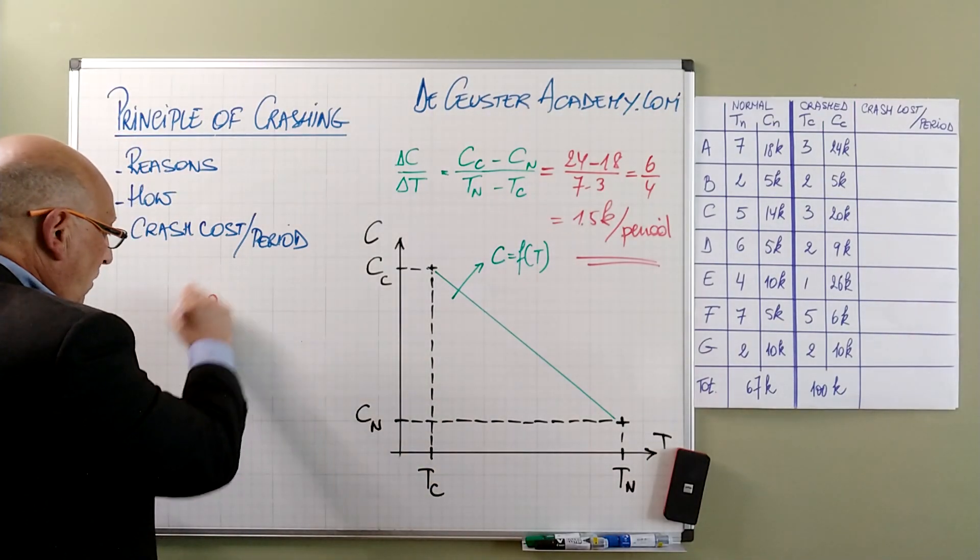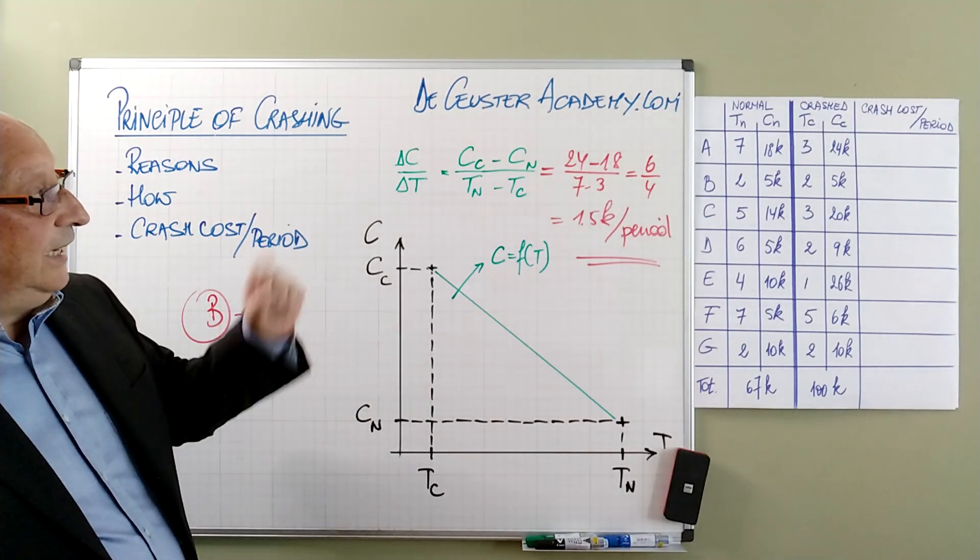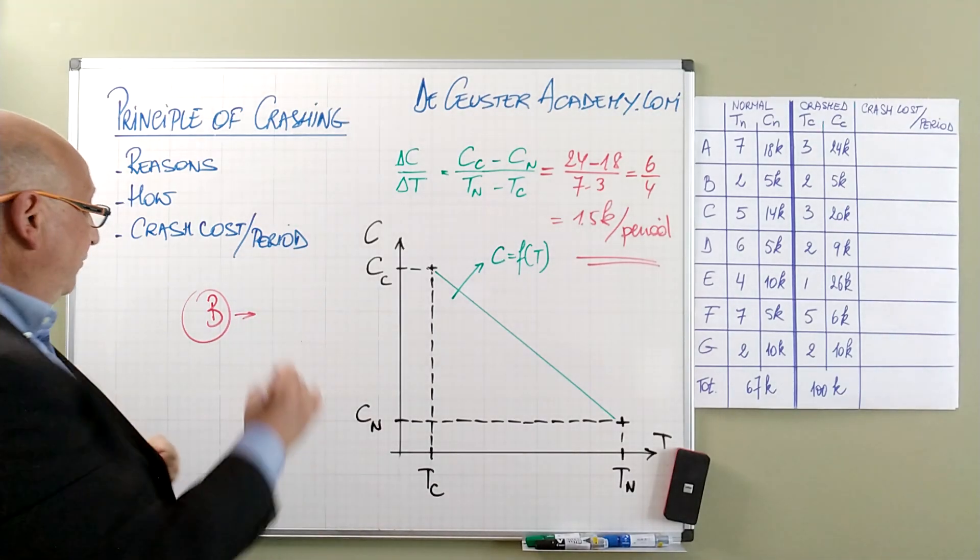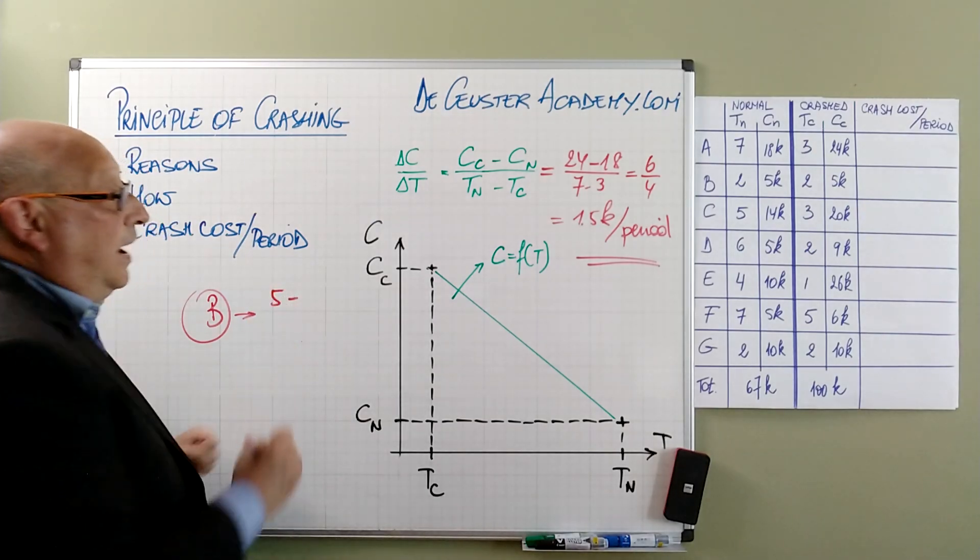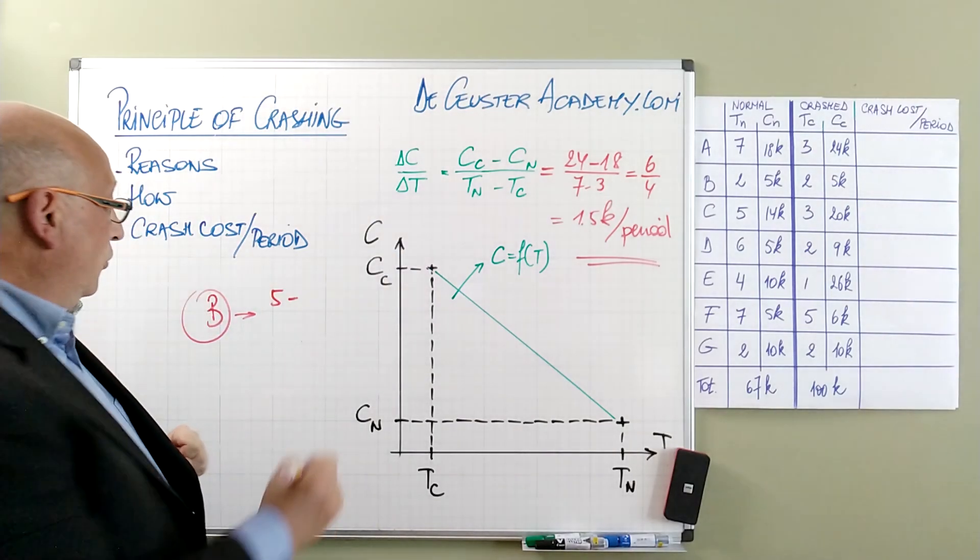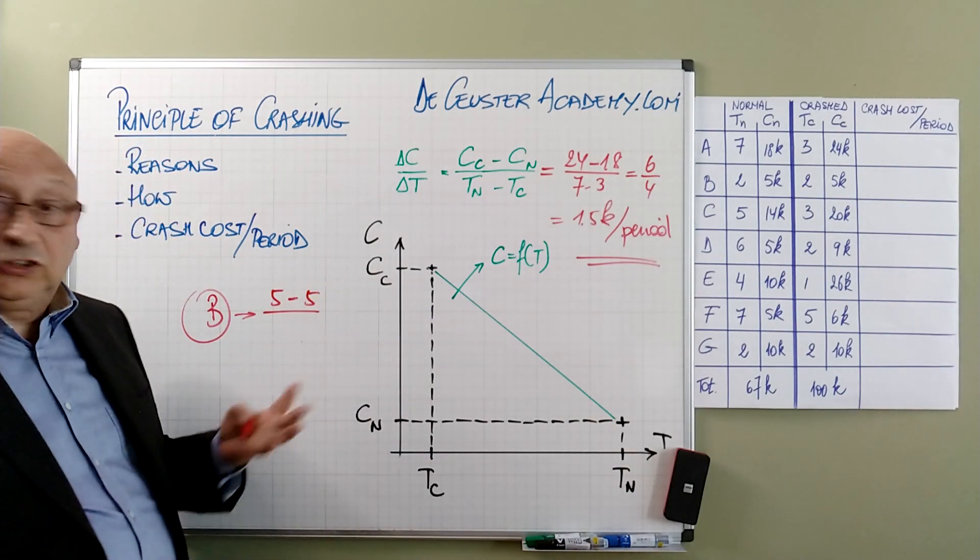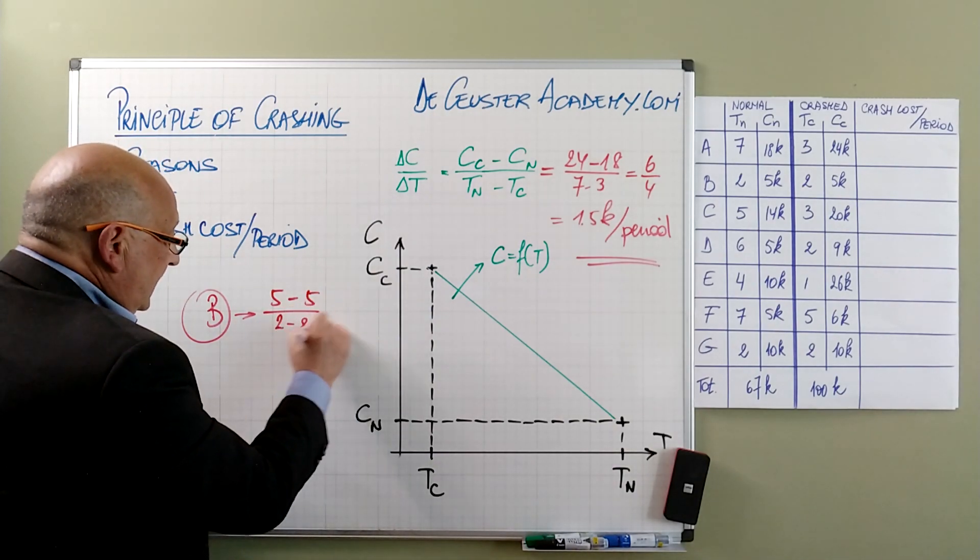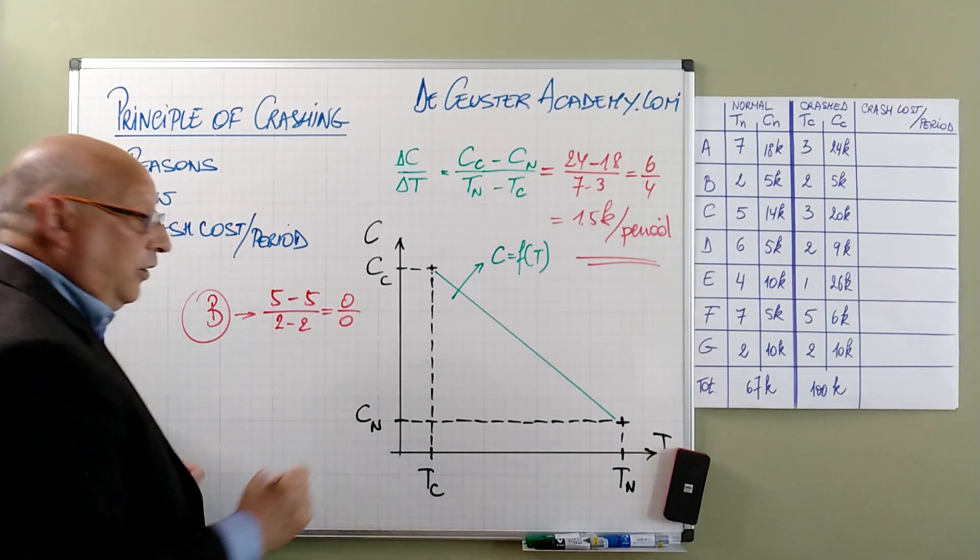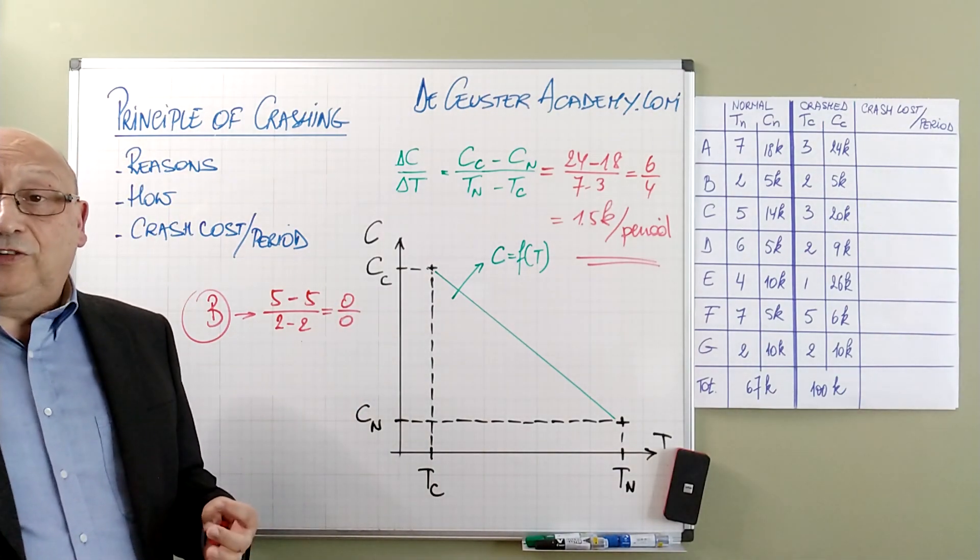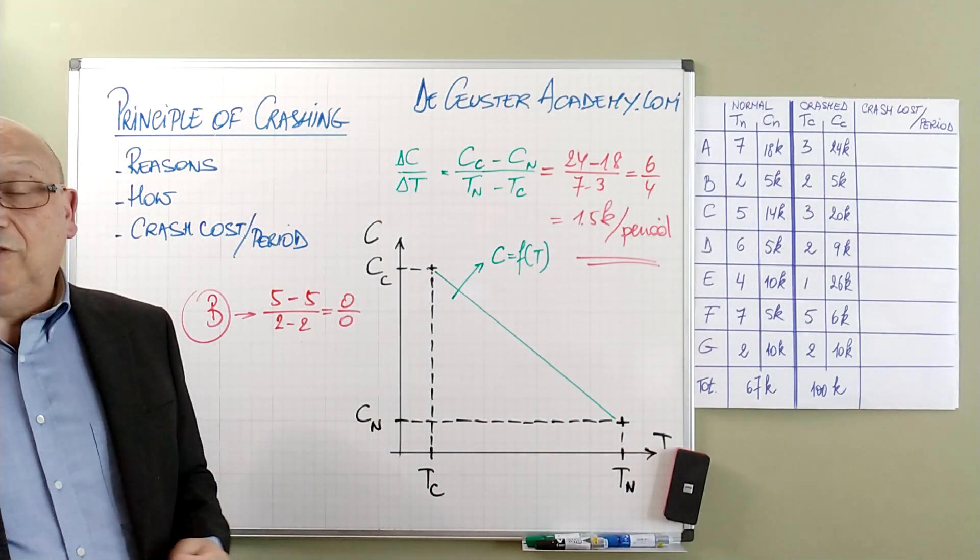Activity B, here we have the crash cost is 5 minus 5 for the normal cost divided by the time difference, 2 minus 2, which is in fact 0 over 0.